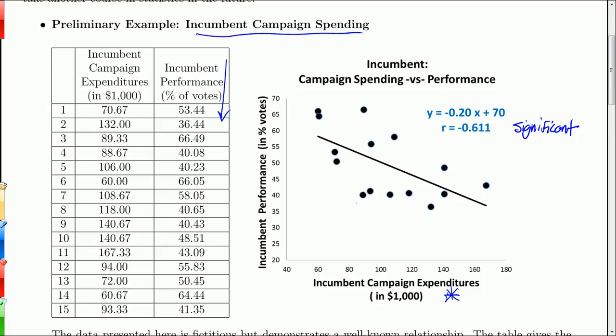We have a significant negative correlation between incumbent campaign expenditures and how well they do in the election. That's sort of counterintuitive — we always thought that the more money you spend, the better you do. But in this case, it looks like the more money you spend, the worse you do. If you look at the slope, negative .2, what this says is that for every extra thousand dollars an incumbent spends on the campaign, he or she can expect to lose .2 percentage points. That's very bad.